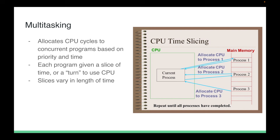Multitasking involves the allocation of CPU cycles (FDE cycles) to programs running at the same time based on priority and time. Each program is given a time slice to use the CPU for a certain number of cycles. The slices can vary in length, allowing multiple programs to run simultaneously. The OS coordinates their usage of the CPU, acting basically like a gatekeeper so everything works smoothly.